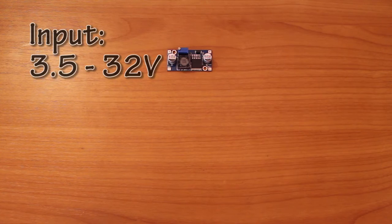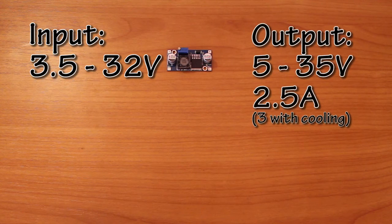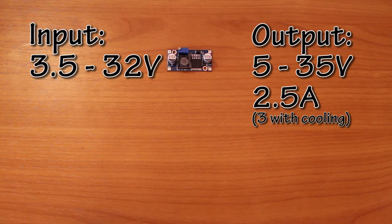The input voltage is between 3.5 and 32 volts and the output voltage between 5 and 35 volts. The output current is 2.5 amps, 3 if you add a heatsink.